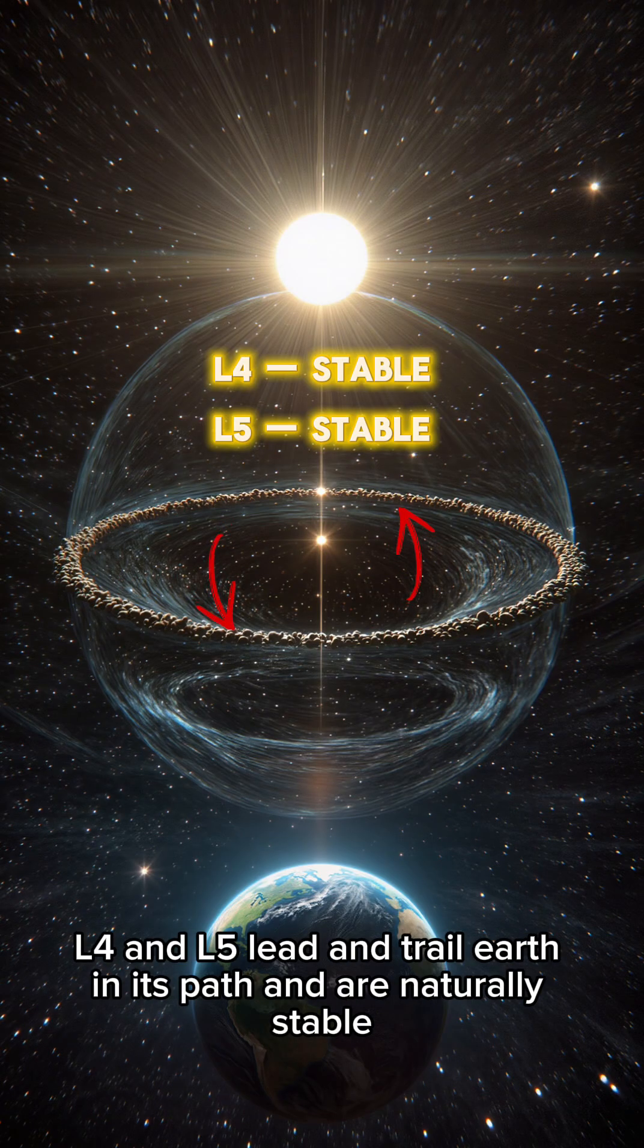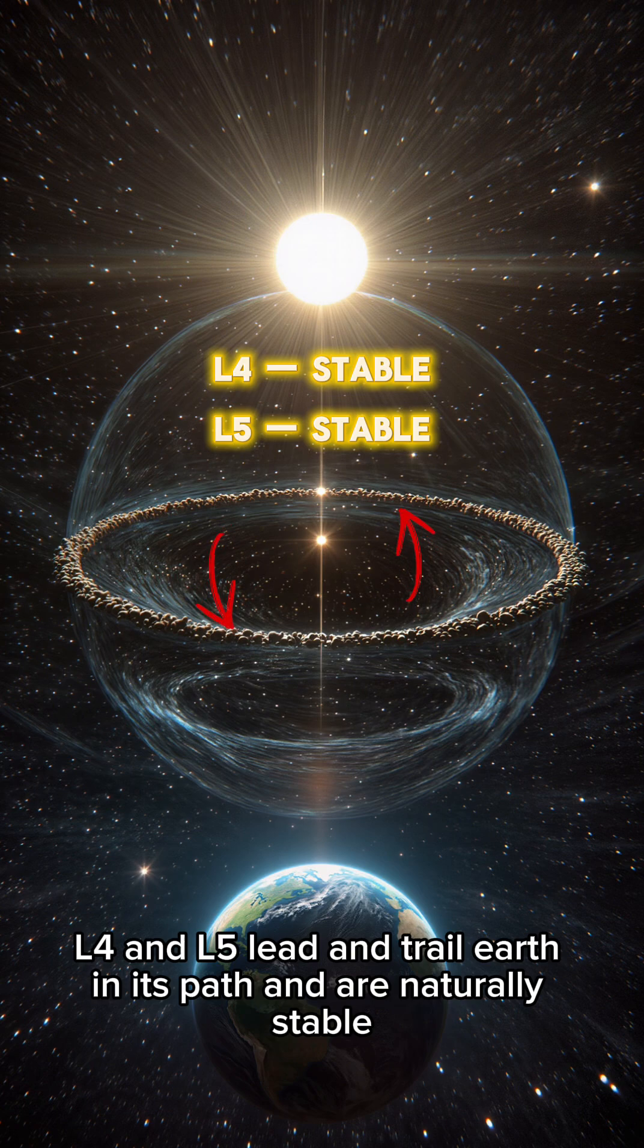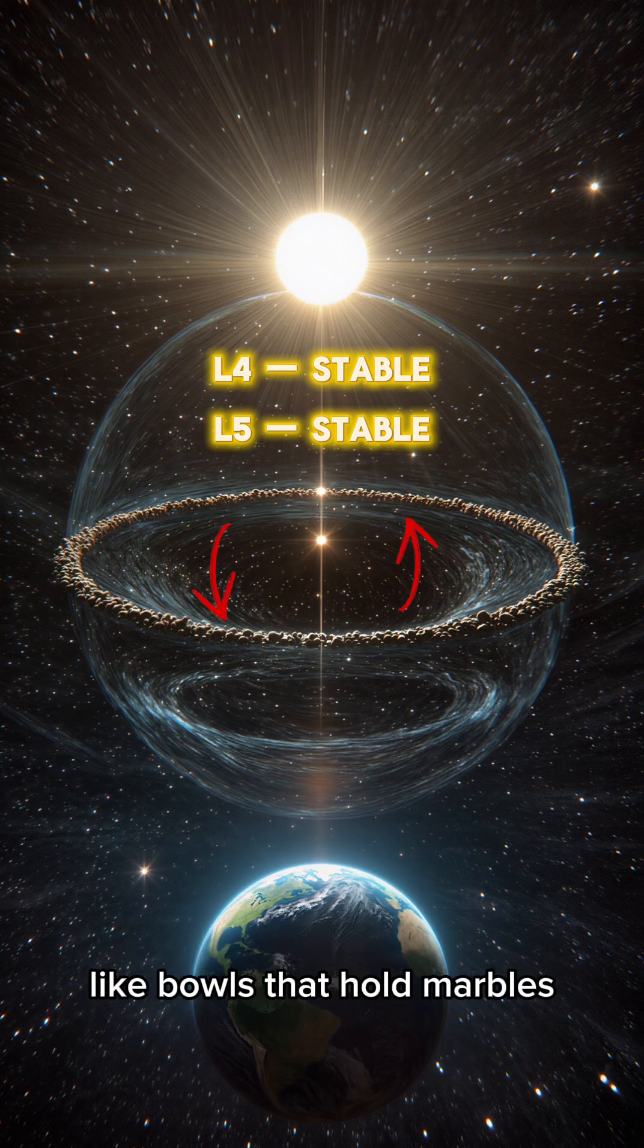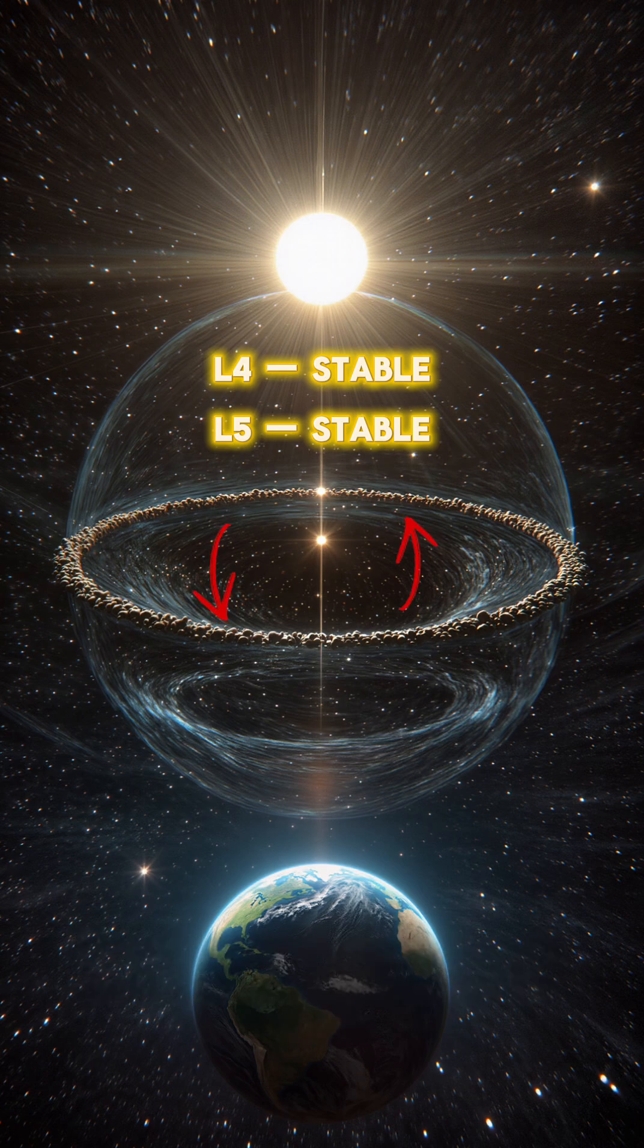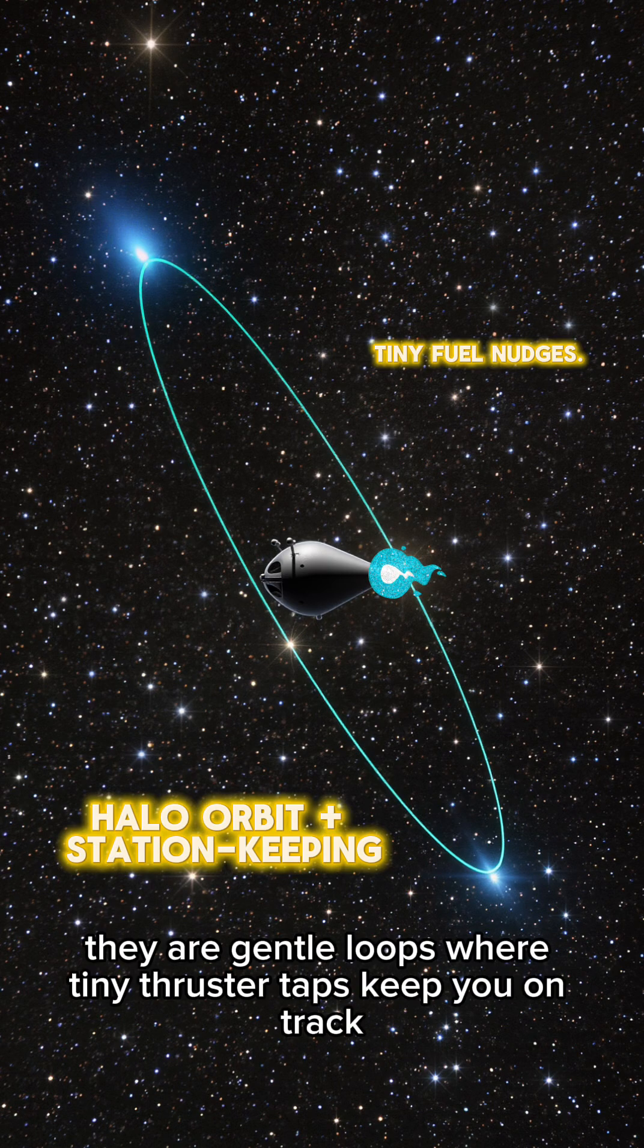L4 and L5 lead and trail Earth in its path and are naturally stable, like bowls that hold marbles. These points are not still. They are gentle loops where tiny thruster taps keep you on track.